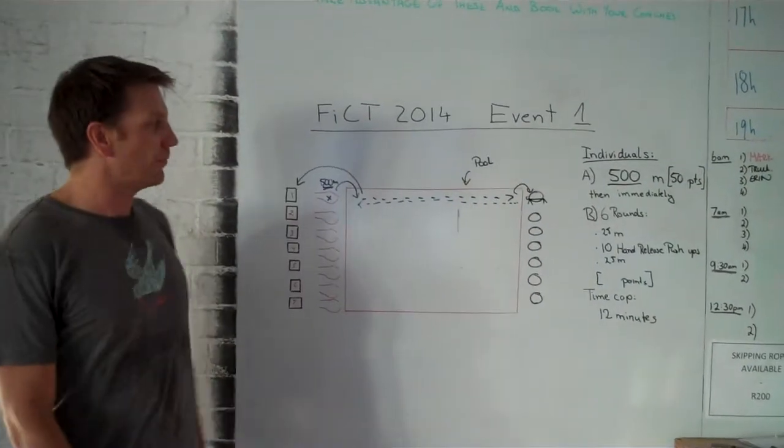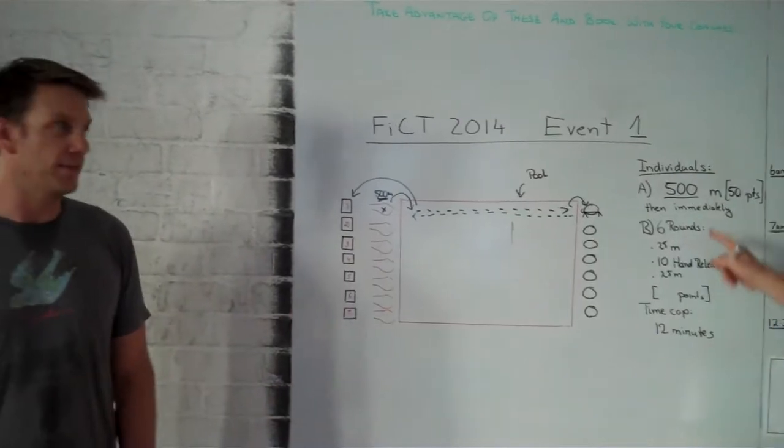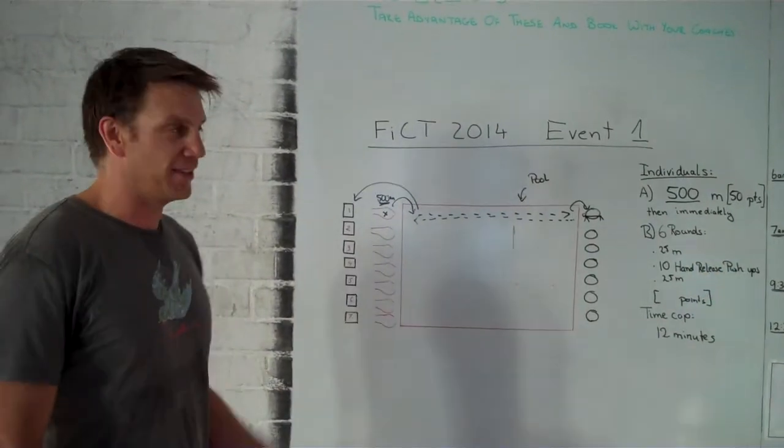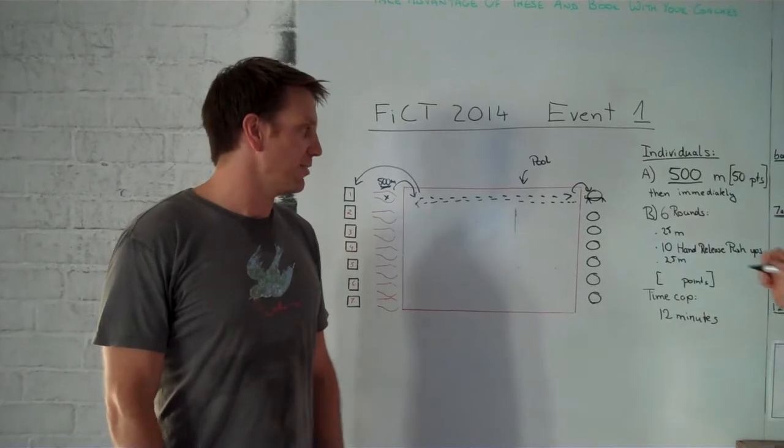The next scoring opportunity will be for the six rounds of swim 35 meters, ten hand release push-ups. The points we've allocated for this is 100 points.